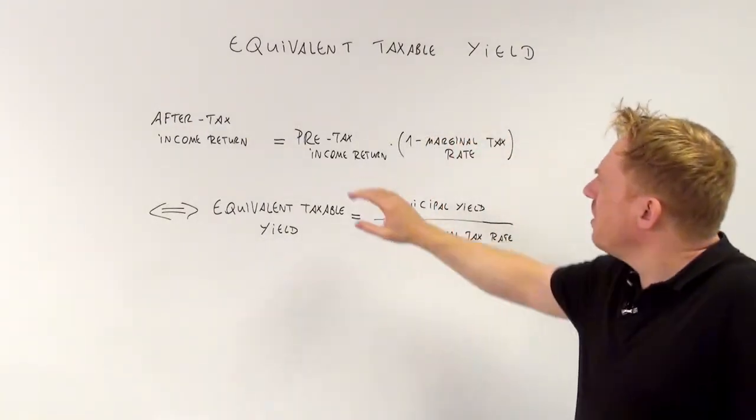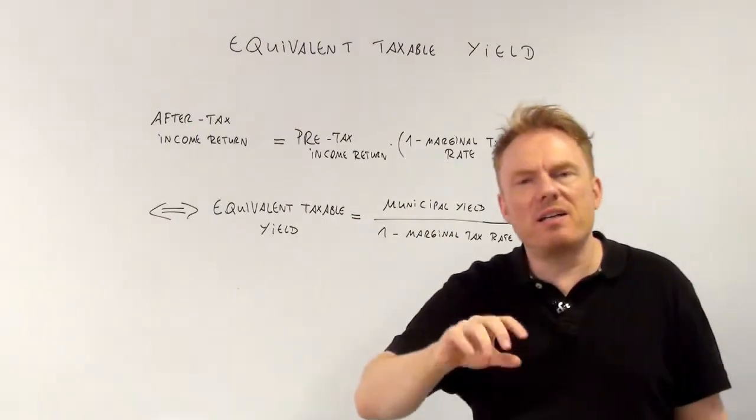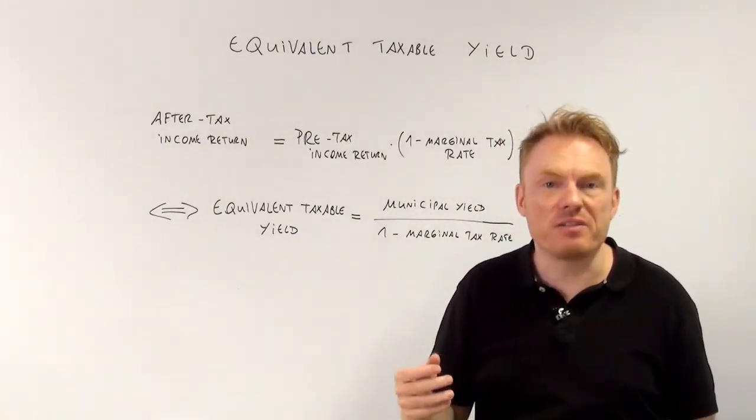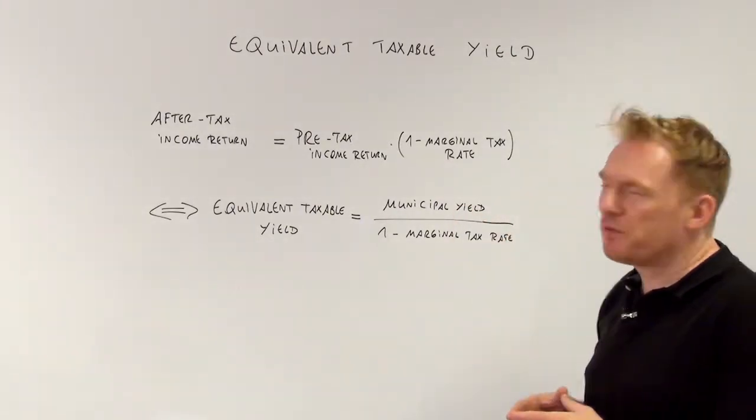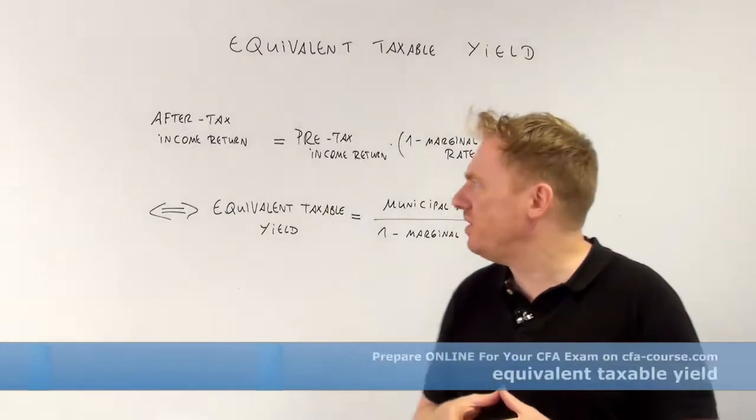So if you have a pre-tax yield of say 6% and there is a marginal tax rate of 40%, what is the after-tax yield?